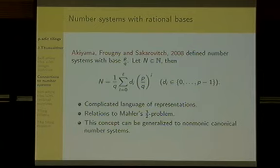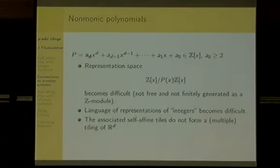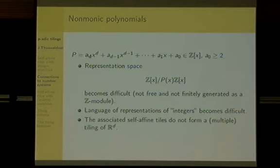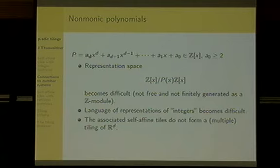I am also interested in generalizing this concept to polynomials. We do the same as before, but now we look at polynomials that are non-monic in general. Again, the digit set goes from 0 to the norm minus 1. We have this representation space, which is a module that is no longer finitely generated. So the representation space becomes difficult. Either your representation space becomes difficult or the language becomes difficult. These objects are much more difficult than the number systems in the monic case.